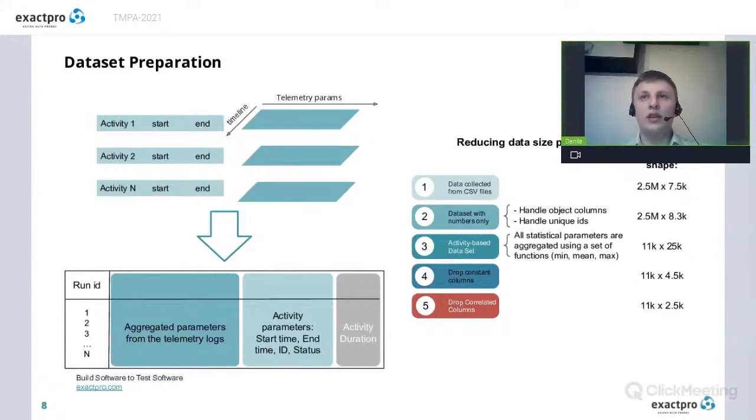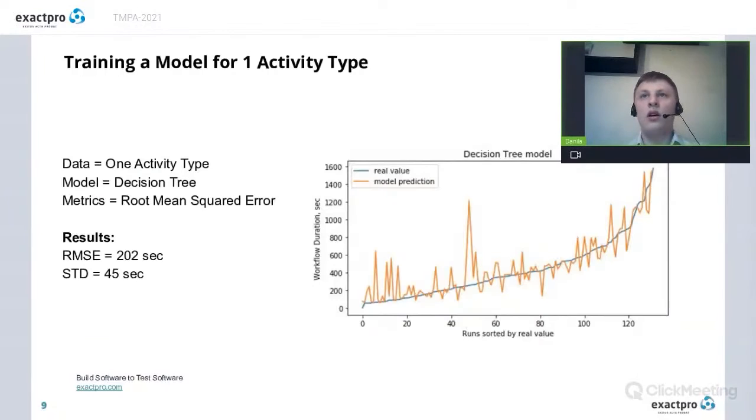Final size of the table was still big. It was about 2500 parameters. But it was much, much smaller than we had before.